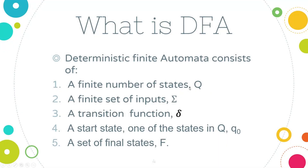Let's do a quick revision of what a DFA is. DFA, also known as Deterministic Finite Automata, consists of five things. First, we have a finite number of states represented with capital Q. Then we have a finite set of inputs represented with sigma. Then there is a transition function represented using delta. Then we have a start state, which is one of the states in Q, represented using Q0. And finally, we have a final state, which can be one or more states, represented using capital F.